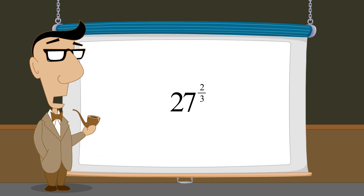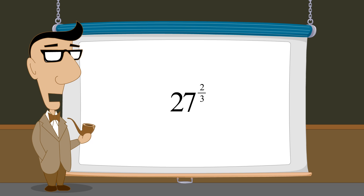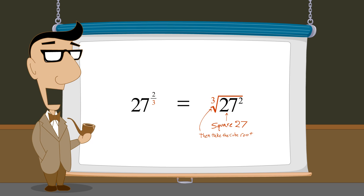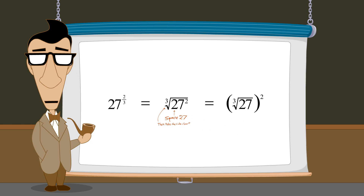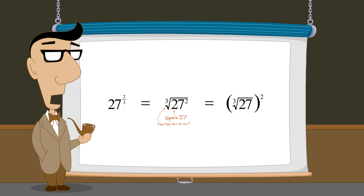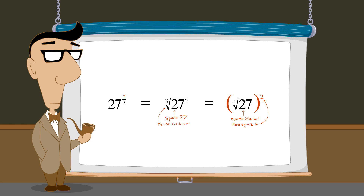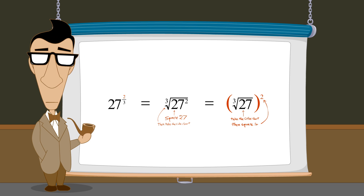So we have two options for evaluating an expression with a fractional exponent. We can raise the base to a power specified by the numerator, and then take the root specified by the denominator. Or, the operations can be performed in the opposite order, taking the root first, and then raising the result to a power. Either way, we get the same answer. However, the amount of work that we have to do can be a lot different. Let's do this example both ways and see why.